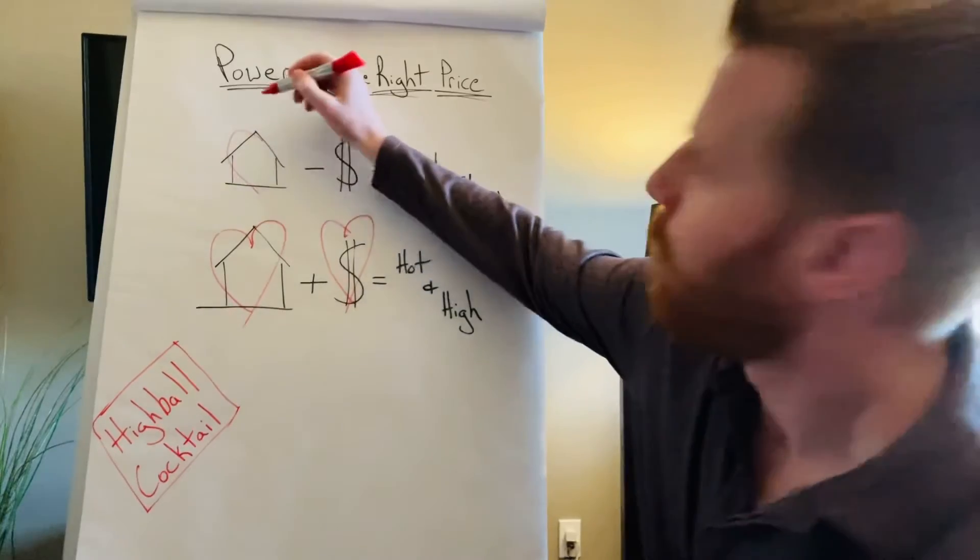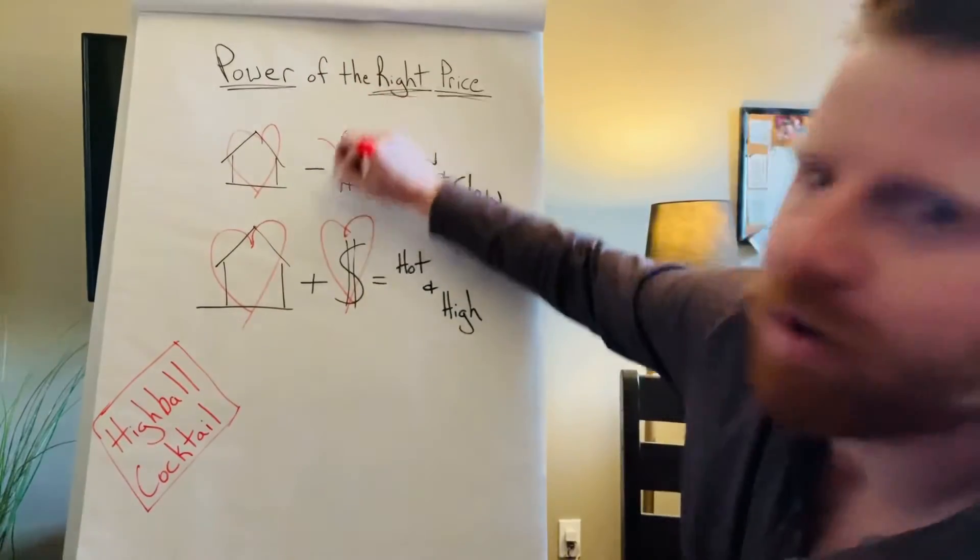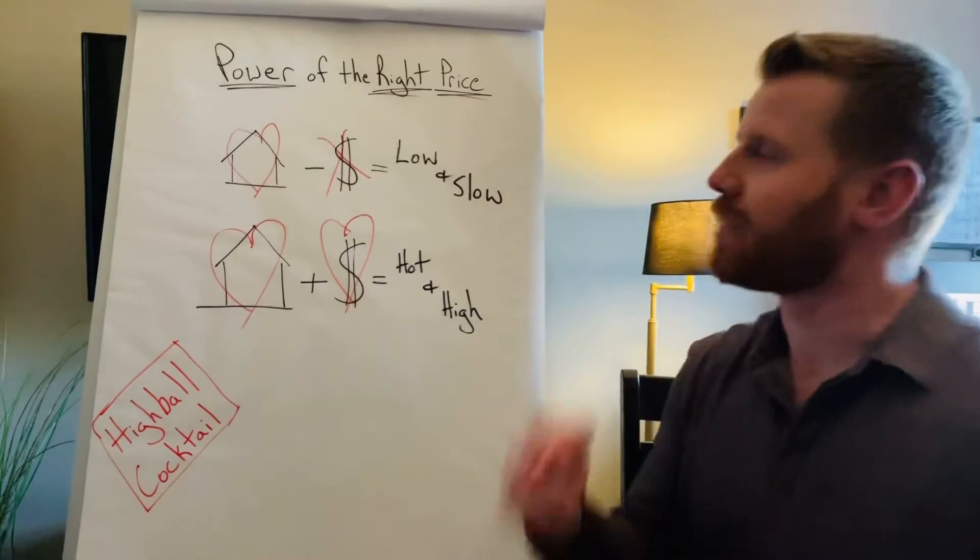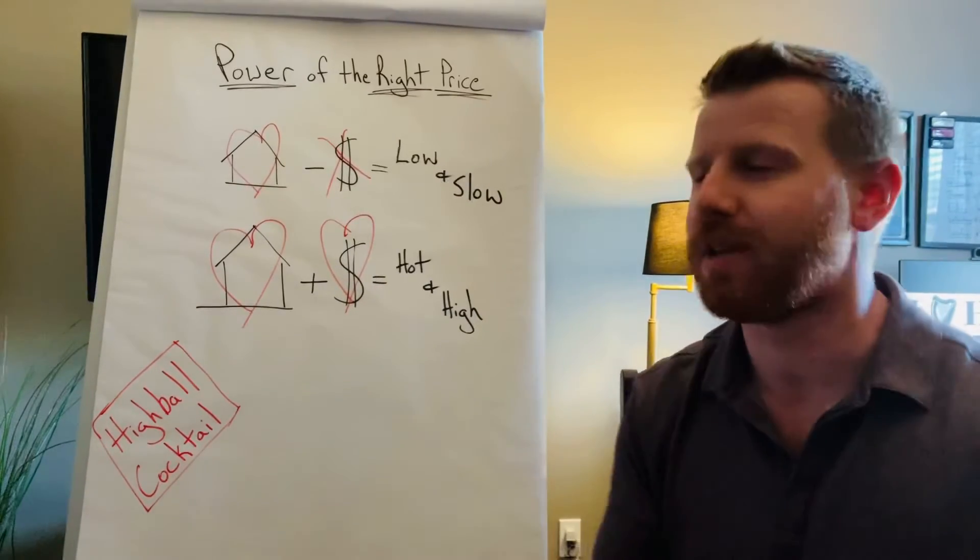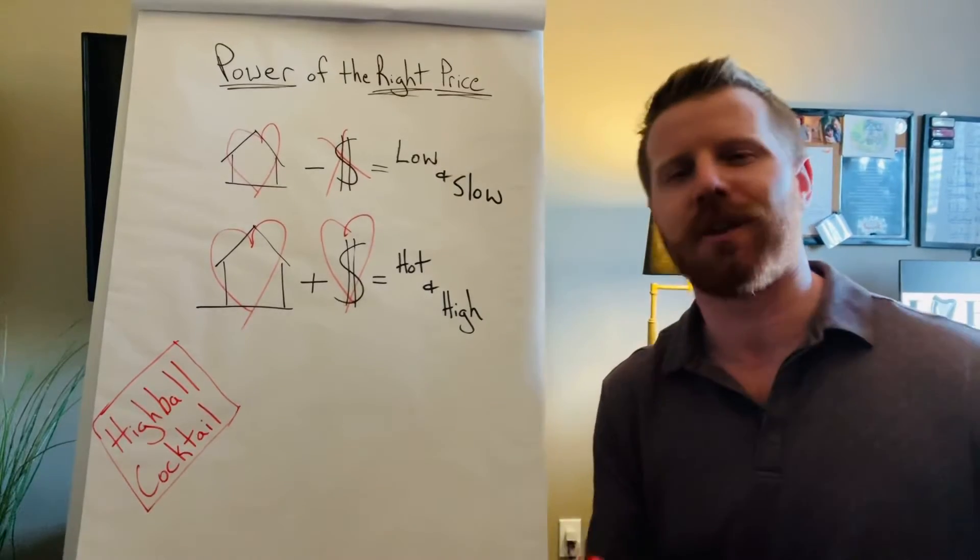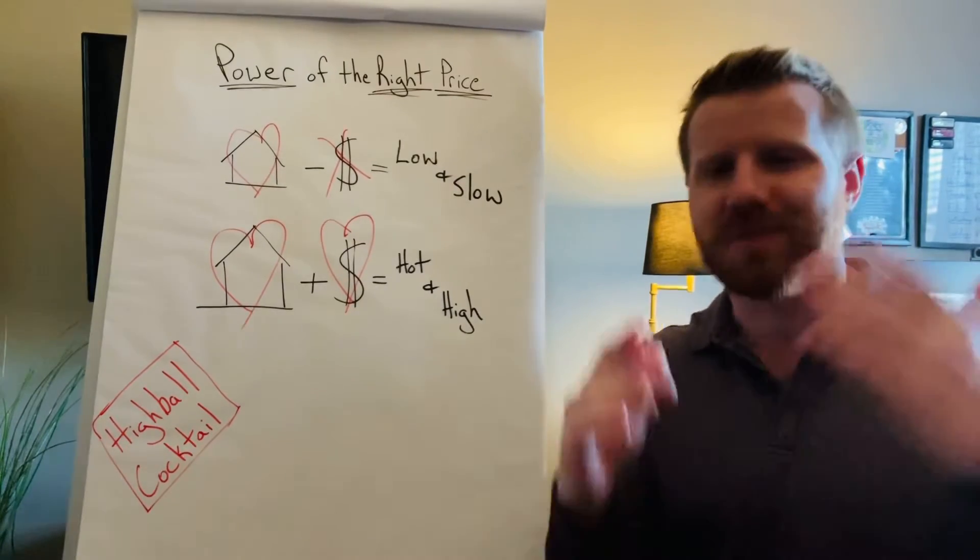But let's say that we have a house and they love it. It's beautiful, right? But man, that price, that price is too high. It's 5% over market. It's 10% over market. And guess what? Buyers know when a house is overpriced because they got the same data.